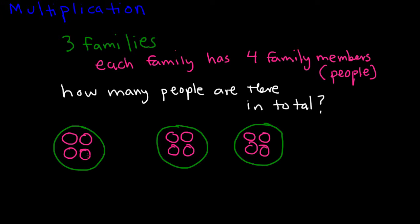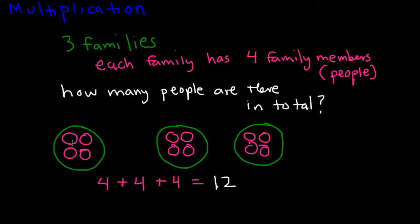So let's count: one, two, three, four, five, six, seven, eight, nine, ten, eleven, twelve. I could also add all four — four plus four plus four. That equals twelve, right? Because four plus four plus four equals twelve.